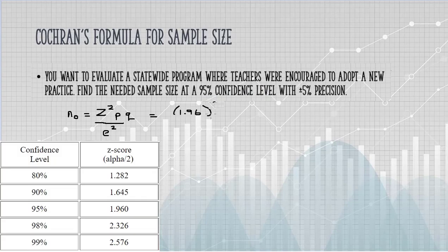P is the estimated proportion of the attribute present in the population. In this case, the proportion of teachers that adopted the new practice.